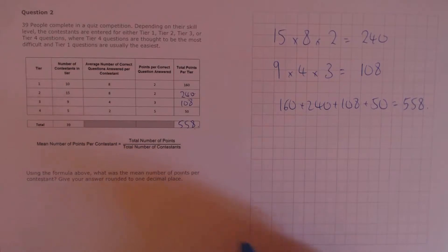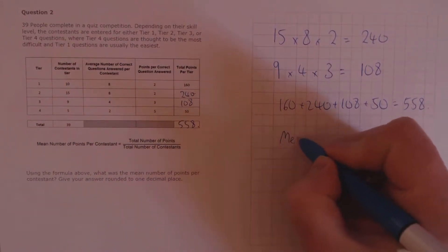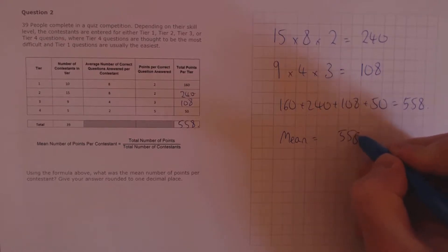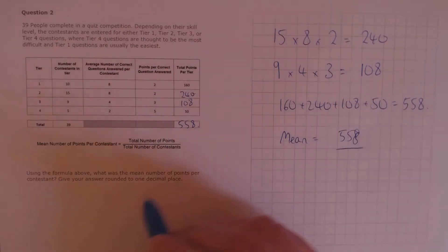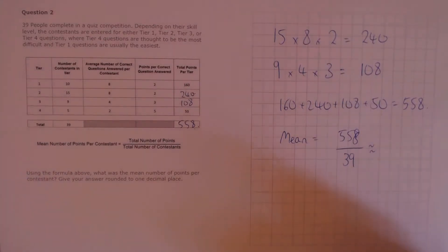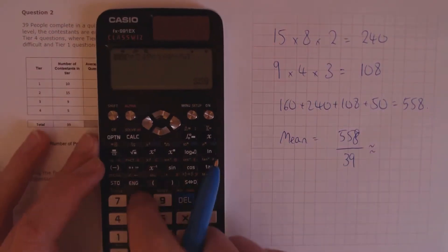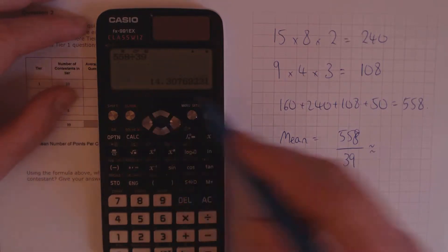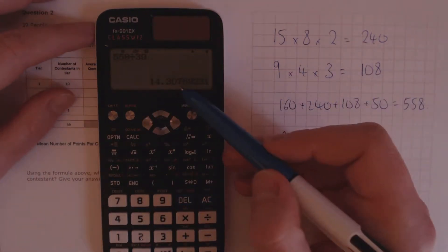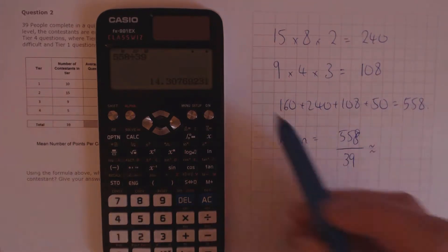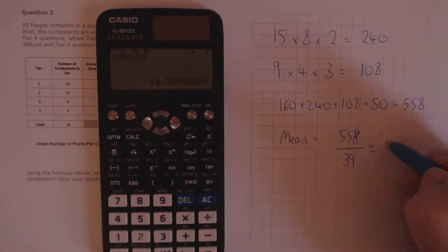Now that we have the total, we can find the mean number. That's the total number of points, 558, divided by the total number of contestants, 39. So, 558 divided by 39 gives us 14.307 on the calculator. We need to give that to one decimal place, so we round to 14.3.